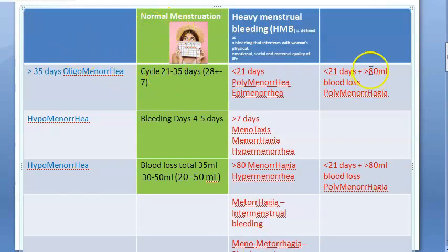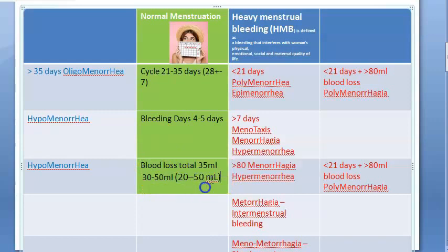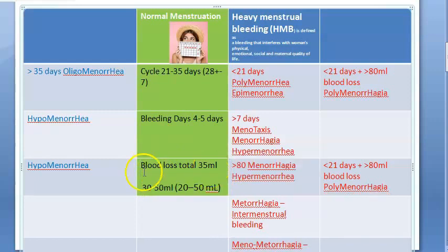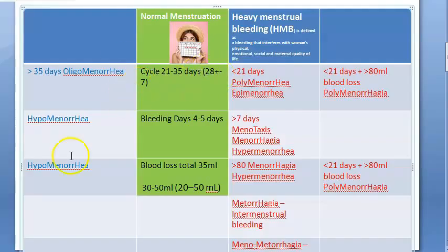Normal cycle is 28 days plus or minus 7, giving 21 to 35 days. Bleeding is around 4 to 5 days — some say 2 to 7 days. Total blood loss is around 35 ml, so 30 to 50 ml. Anything other than this becomes abnormal uterine bleeding.